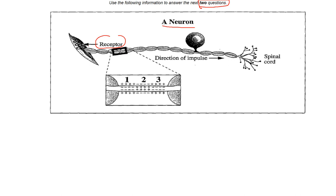Look at the navigational information they're giving you. On one end we have a receptor taking messages. They're also showing you the direction of the impulse — in this case, going from left to right. That impulse is being carried toward another landmark: the spinal cord, which is part of the CNS, the central nervous system. They then show a portion of the axon blown up and numbered one, two, and three, showing positives on the inside at segment two.